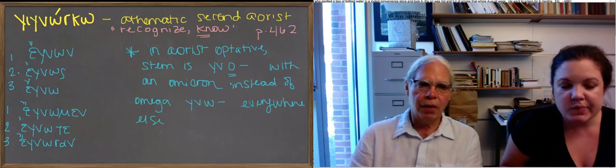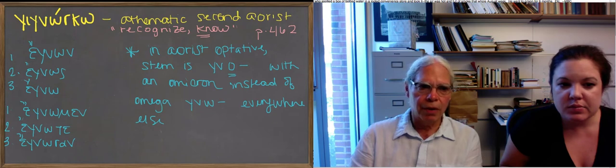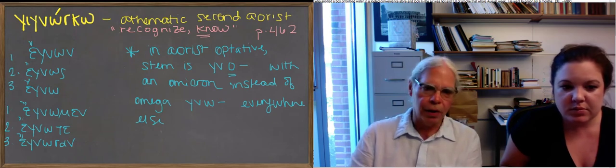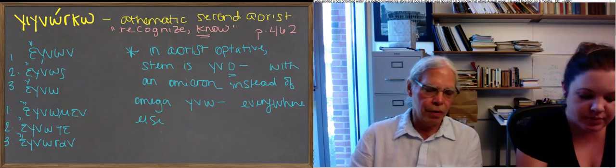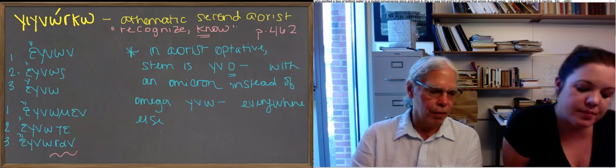The same as etithen, etithes, etithe, and so forth, that you had for the athematic verbs. And then egnomen, egnote, egnosan. Again, that third-person plural ending that you just saw in the third-person plural of the past tense of the imperfect of femi.